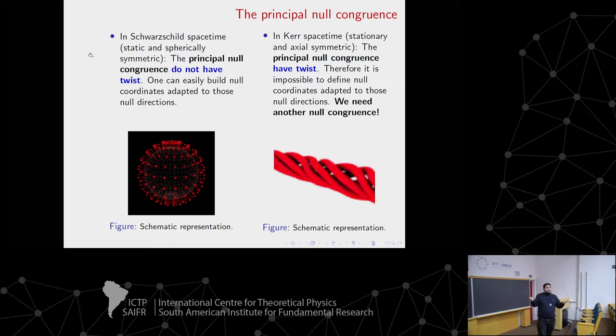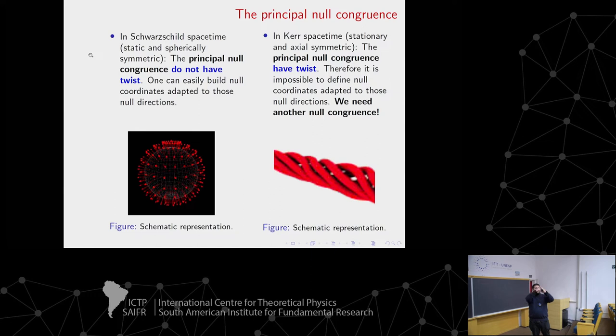But what happens in Kerr? The principal null congruence has twist. What is twist? The null rays twist. The problem is that if the null ray twists, we cannot define a surface such that each null ray is orthogonal to that surface. Therefore, the principal null congruence does not have the nice geometric property that we need to define null coordinates. So we need another null congruence to define null coordinates in Kerr.